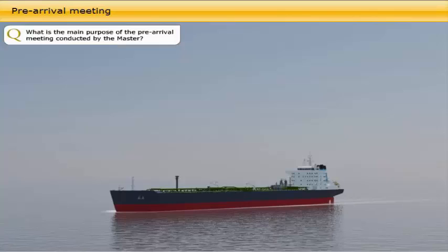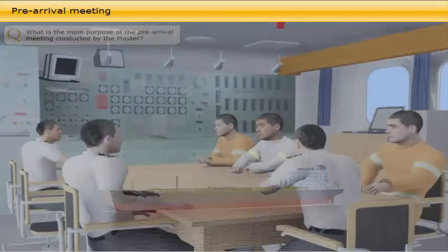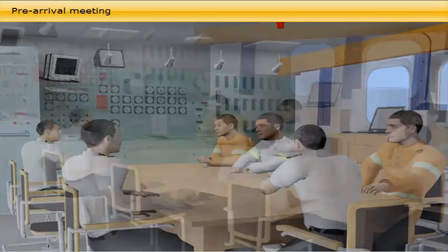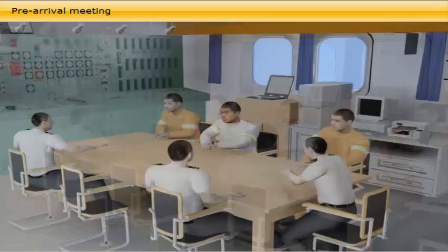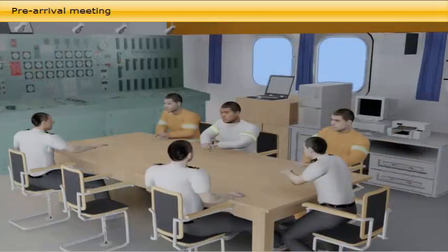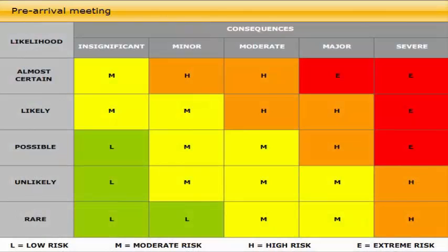What is the main purpose of the pre-arrival meeting conducted by the master? A pre-arrival meeting is performed in different ways depending on the vessel's trade. The master normally conducts the meeting, and the main purpose is to ensure that all officers and crew are acquainted with the time schedule and activities expected to take place during the port call. Through this framework, the risk assessments associated with each in-port activity and the ship's plan for mitigating each of those risks is communicated. The contingency plan, which is the result of risk assessments, should be highlighted in the meeting.